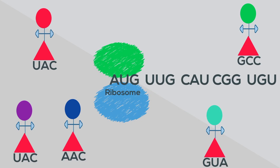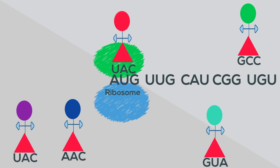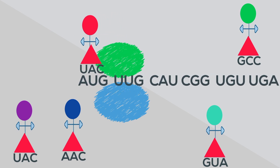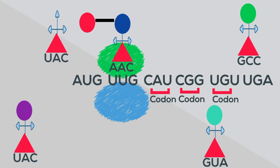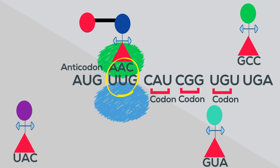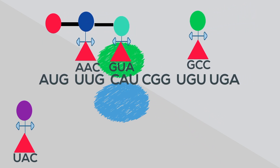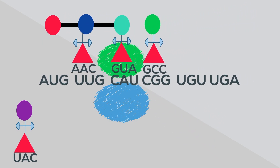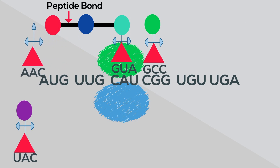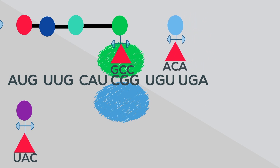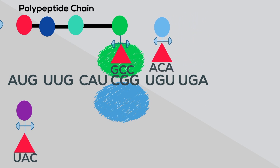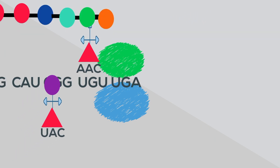At the ribosome, the messenger RNA is read three units at a time. This triplet is called a codon. A transfer RNA has an anticodon, which matches with the codon and has an amino acid attached. As a new transfer RNA moves to the mRNA, the amino acids bond together with a peptide bond, and a string of amino acids begins to form called a polypeptide chain. This process will continue until a stop codon is read.